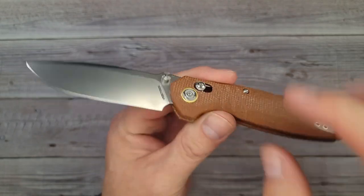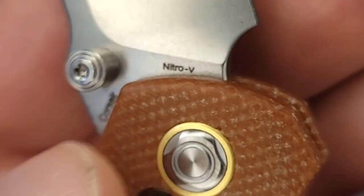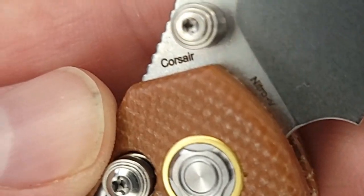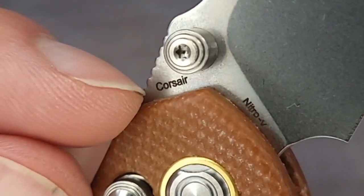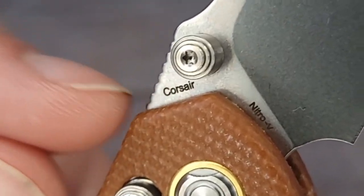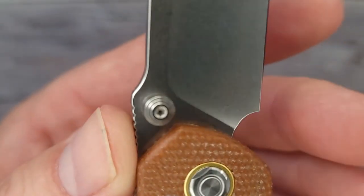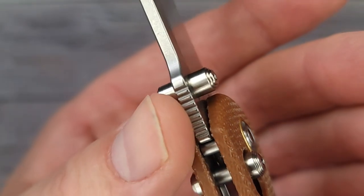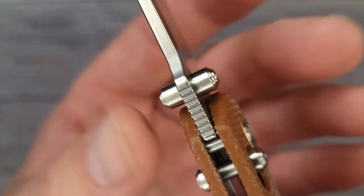So you got a stonewashed blade and look at this, the blade steel is nitro V, baby. That's what I'm talking about. And if you forget what your knife's name is, it's stamped right there behind the thumb stud. And while we're looking at the thumb studs, check them out. They work very well for this knife and have the perfect amount of grip.